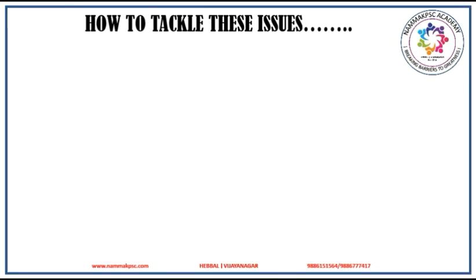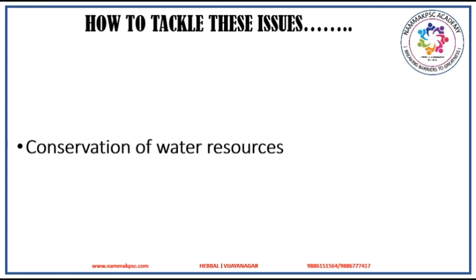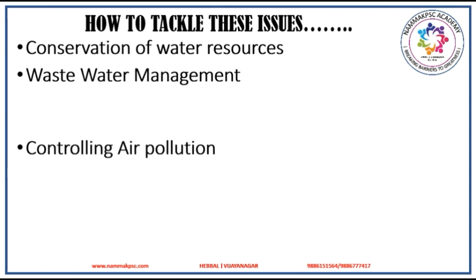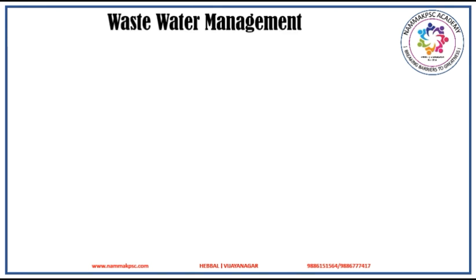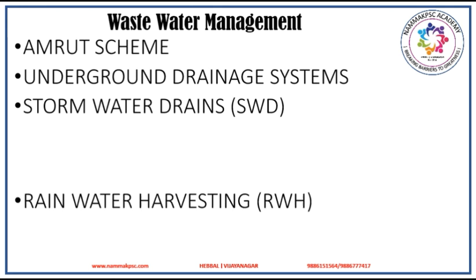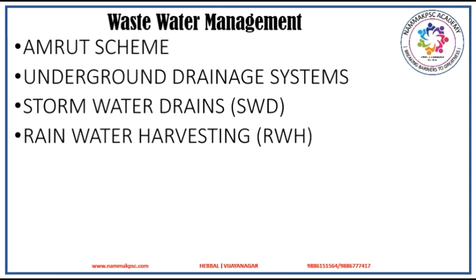Universally, various steps are proposed to tackle climate change issues, including conservation of water resources, wastewater management, controlling air pollution, and energy conservation. The urban local bodies of Karnataka are working on these lines. Under Amrut scheme, sewage treatment plants are being constructed across Bengaluru, and it is proposed to construct STPs at various places of Karnataka. Urban local bodies are also working on construction of underground drainage systems, stormwater drains and rainwater harvesting systems for effective wastewater management, alongside efforts for solid waste management.